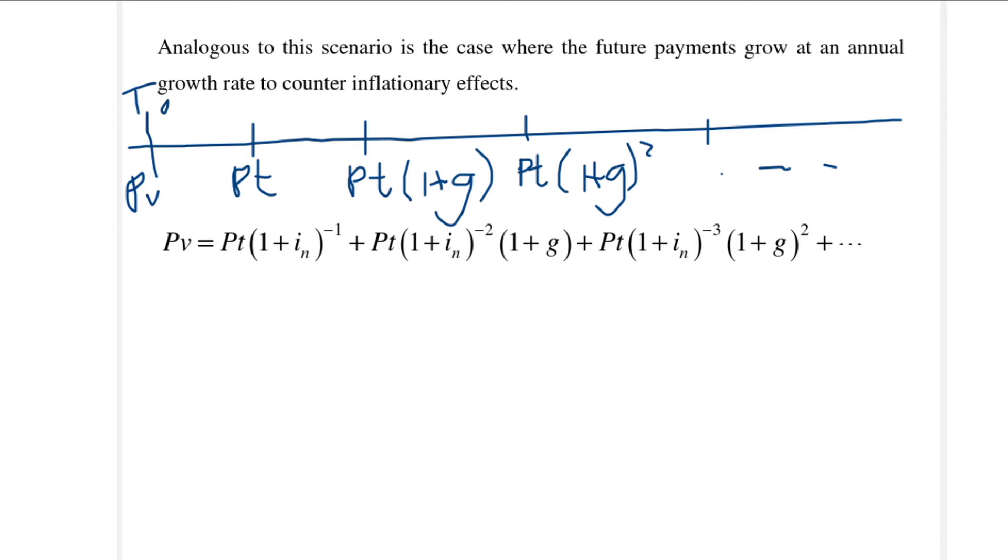To get the present value of a growing perpetuity we need to move all these payments back to time T0. This is my first payment and then I move it back one time period. Then this is my second payment and I multiply with 1 plus I to the minus 2 to move it back two time periods. Then my third payment and I multiply with 1 plus I to the minus 3 to move it back three time periods. So again this is a geometric series.